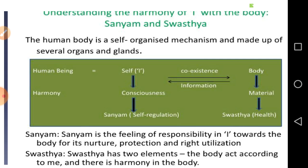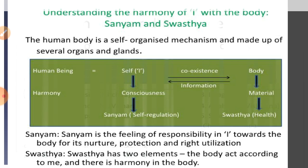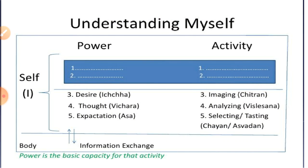इसमें दो तत्व होते हैं: मेरा शरीर मेरे द्वारा काम करता है, और मेरे साथ और शरीर का मेरे साथ — दोनों के बीच समरसता की स्थिति होती है। तो मैं अपने आपको समझूँ — self के अंदर क्या होती है, self में शक्ति क्या है।